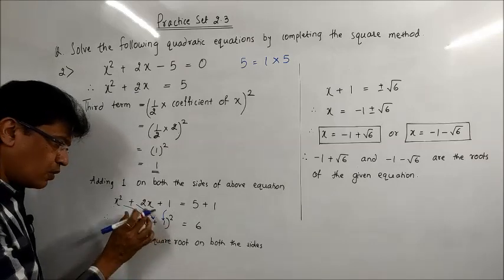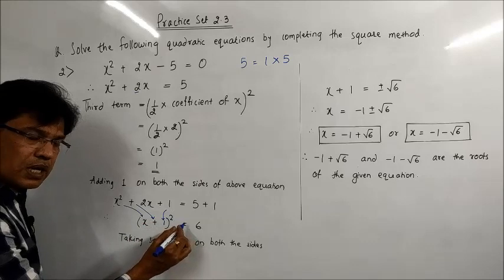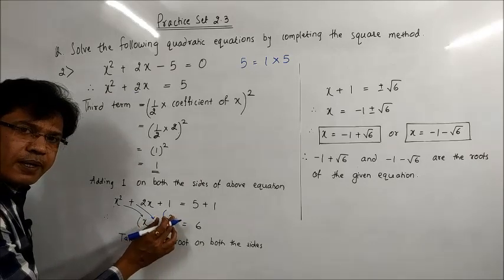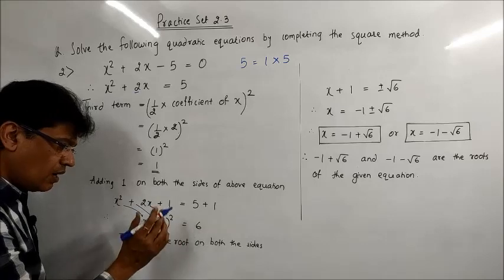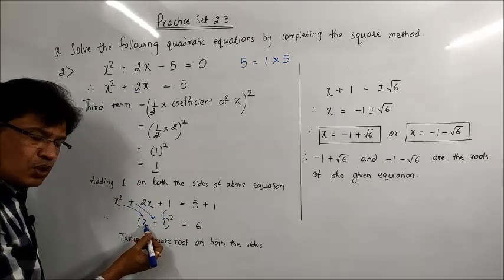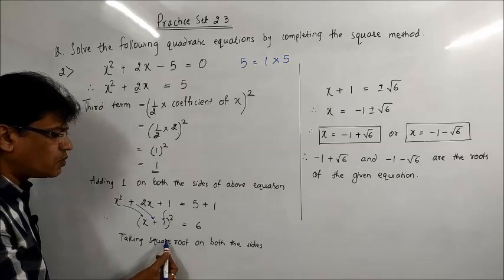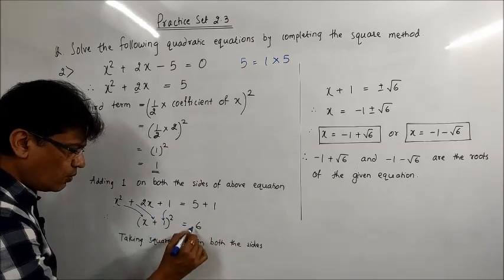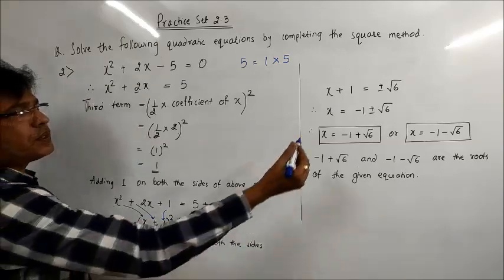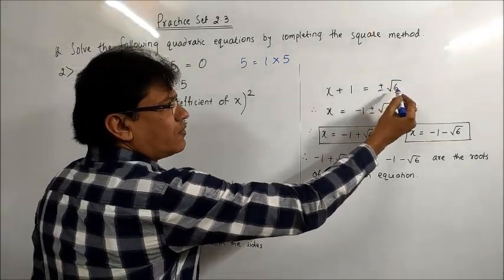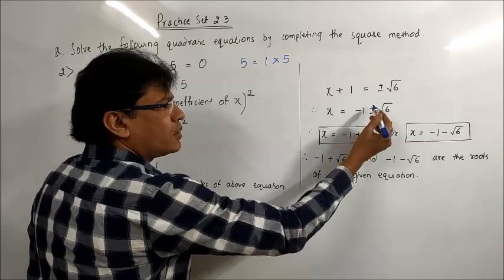So x² + 2x + 1 = 6. Now our aim is to find the value of x, so I have to get rid of the square sign. Taking square root on both sides, the right-hand side always becomes plus or minus. So we get x + 1 = ±√6, and then keeping only x on the left-hand side, +1 goes to the right-hand side giving x = -1 ± √6.